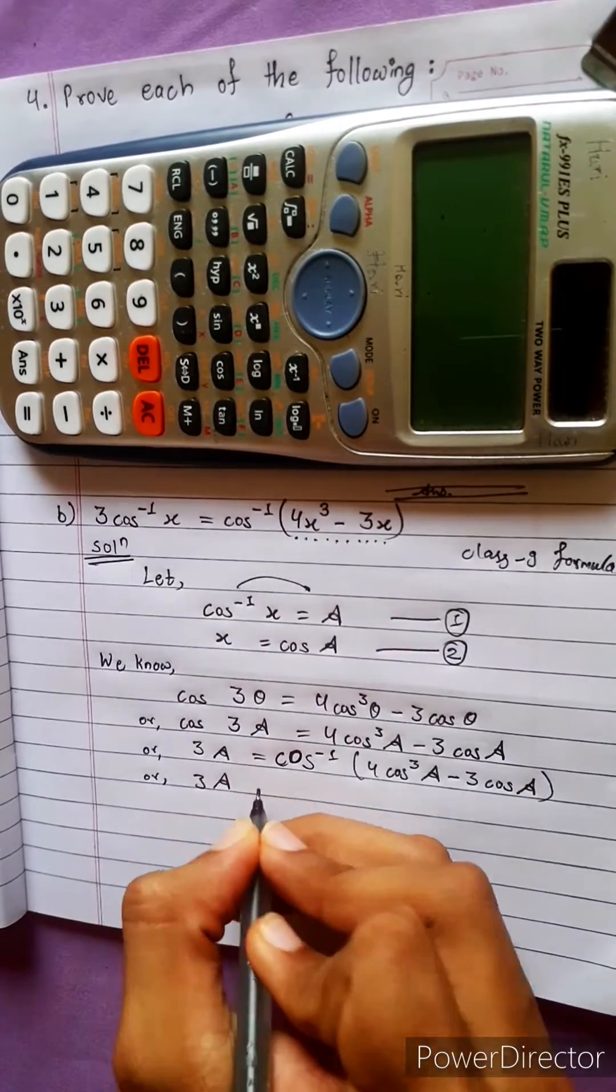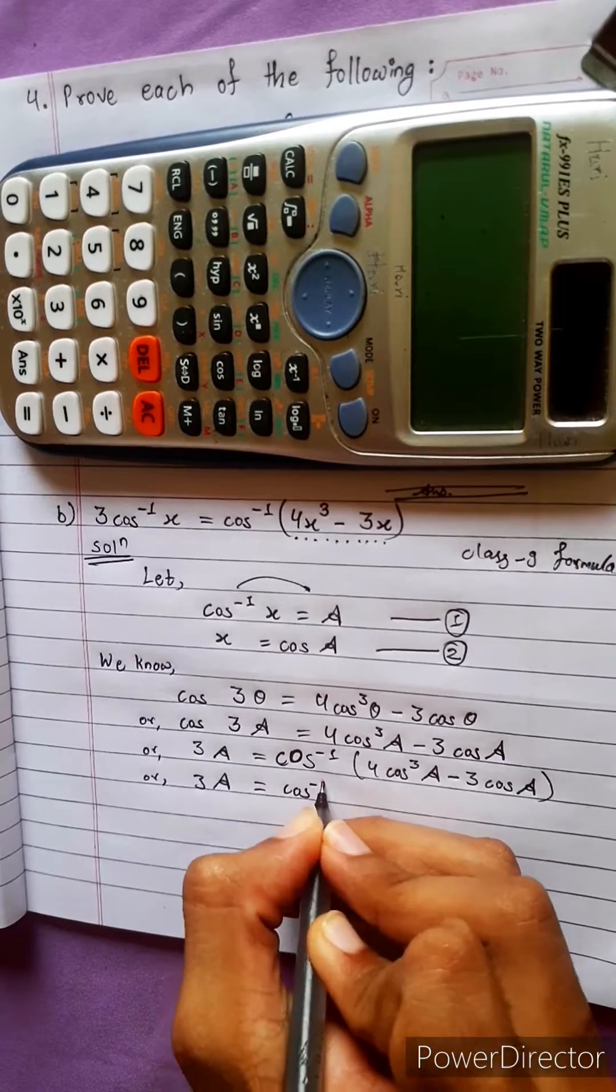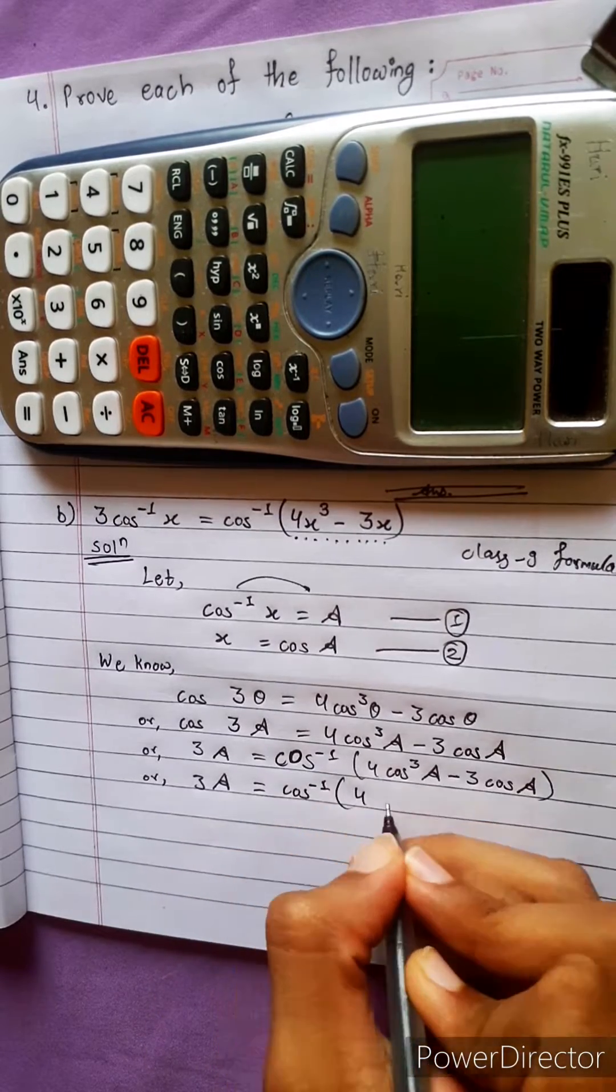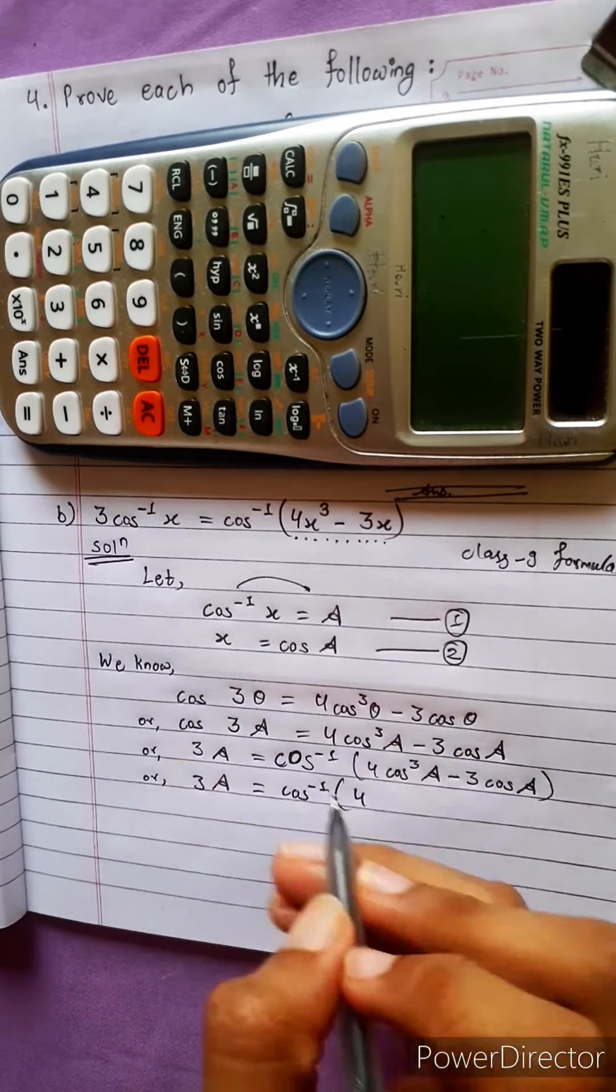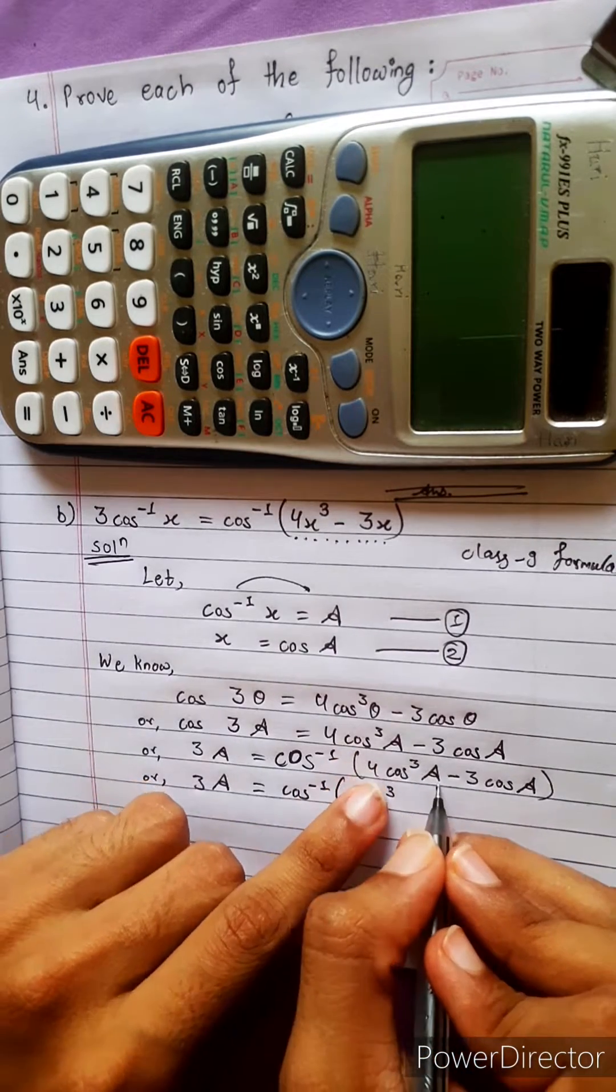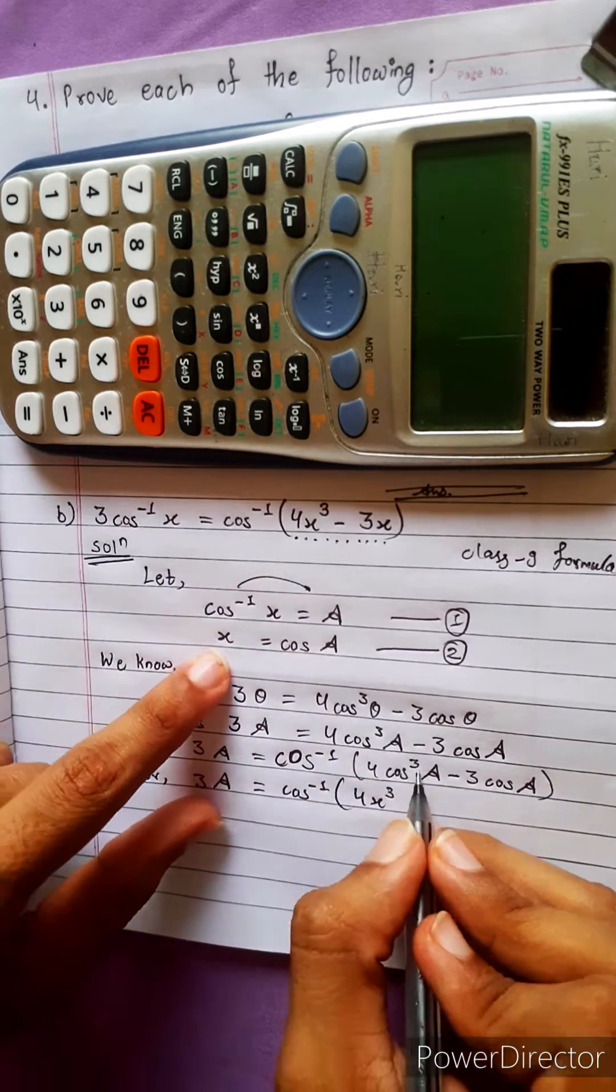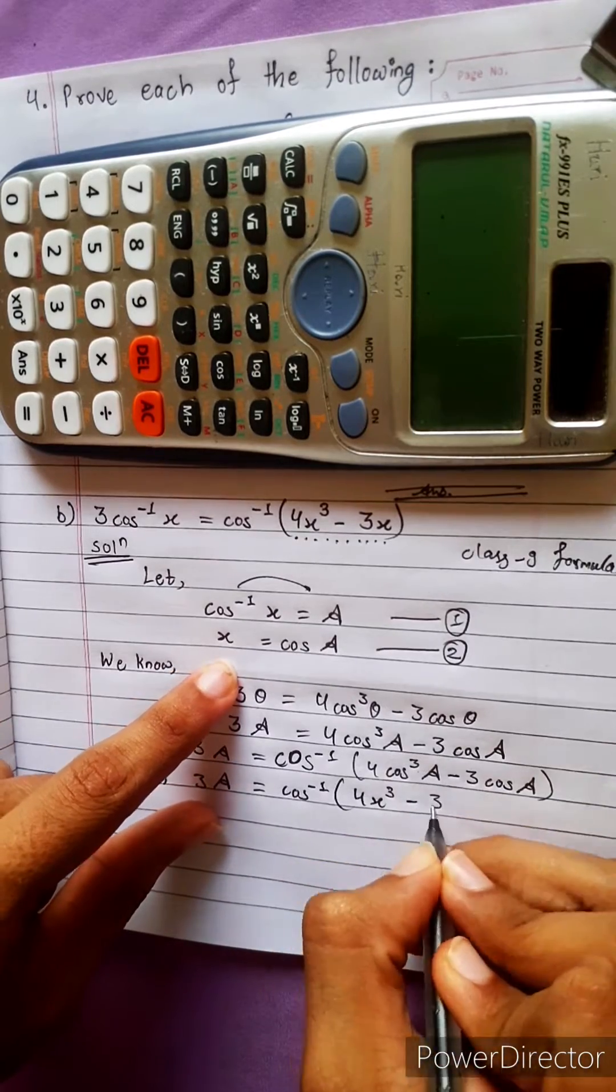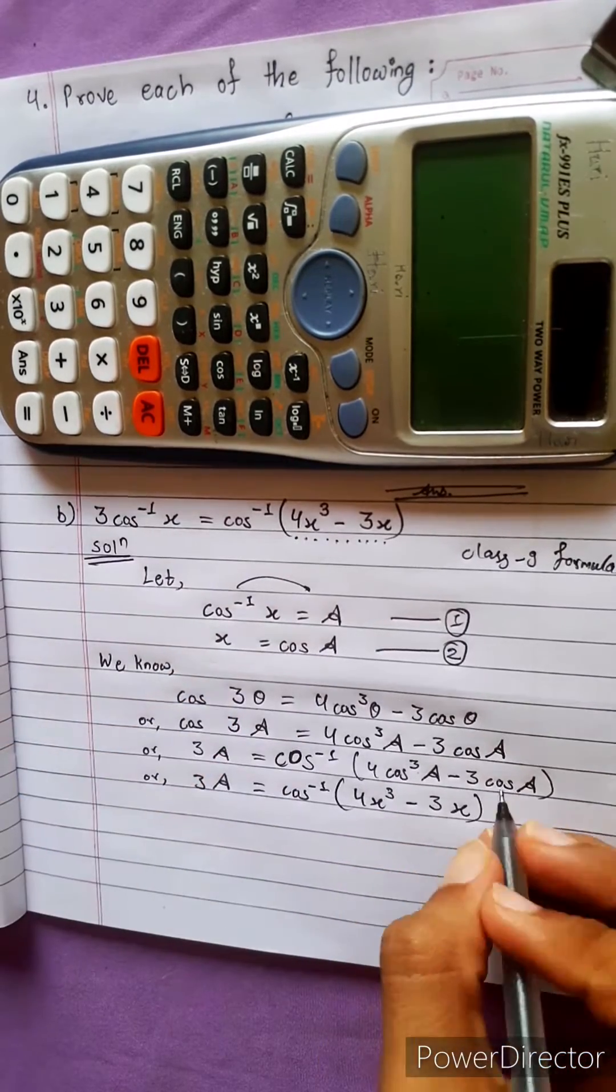Now direct: 3A equals to cos inverse. Cos cube A means cos A is x, it will be x cube. Any confusion? No confusion. Cos cube A, and here is cos A means whole cube: x cube minus 3 cos A means x.